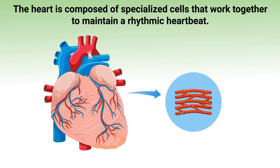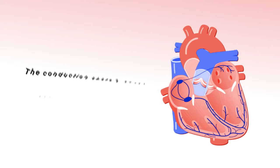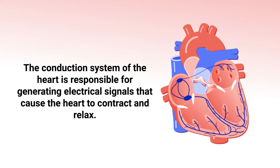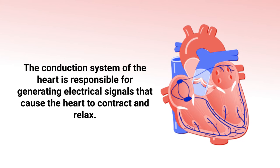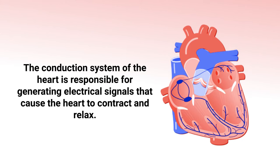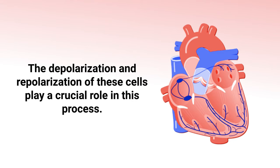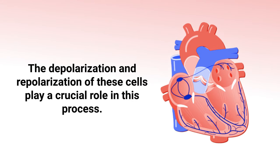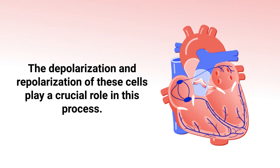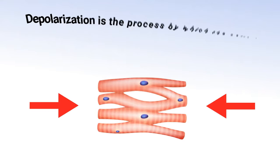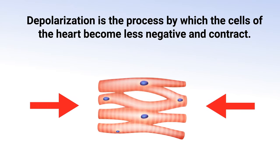The heart is composed of specialized cells that work together to maintain a rhythmic heartbeat. The conduction system of the heart is responsible for generating electrical signals that cause the heart to contract and relax, and depolarization and repolarization play a crucial role in this process.